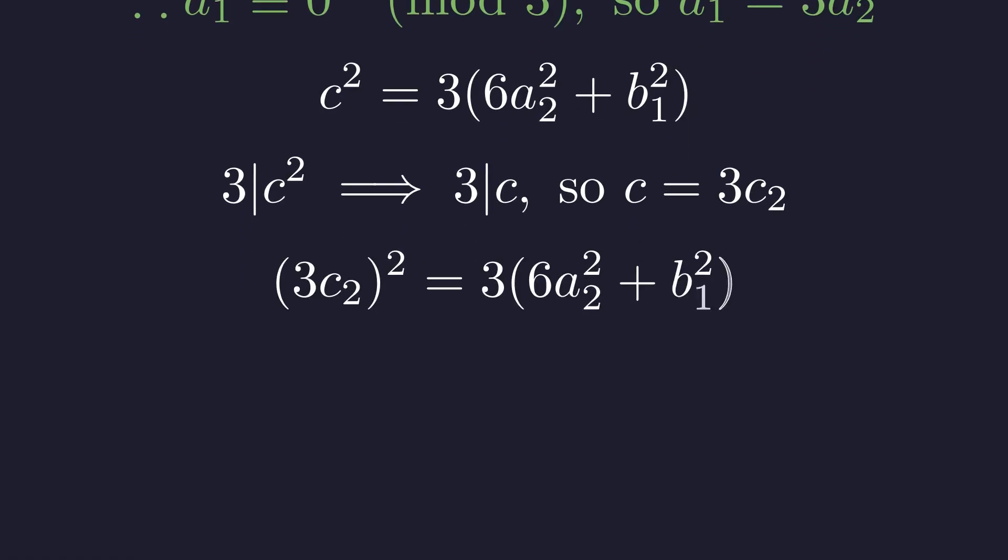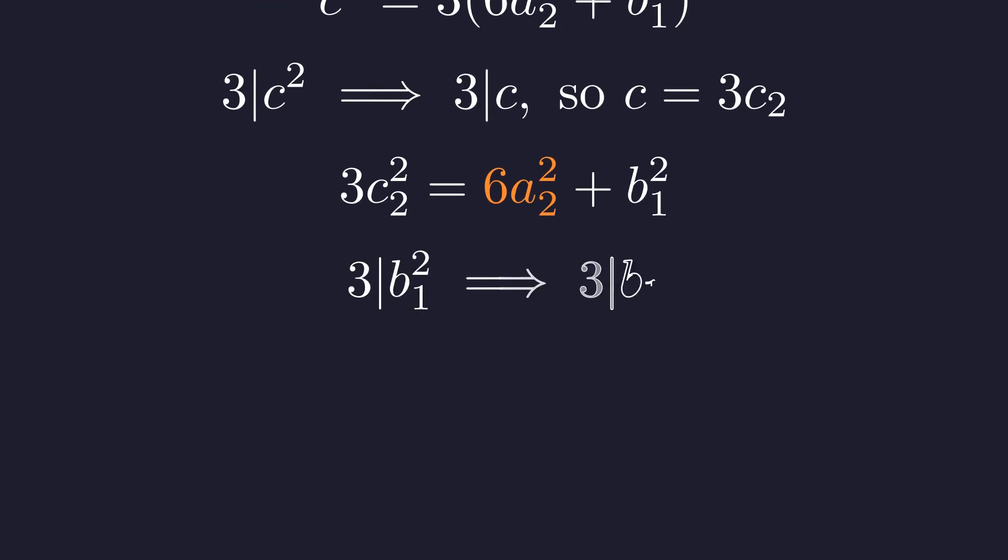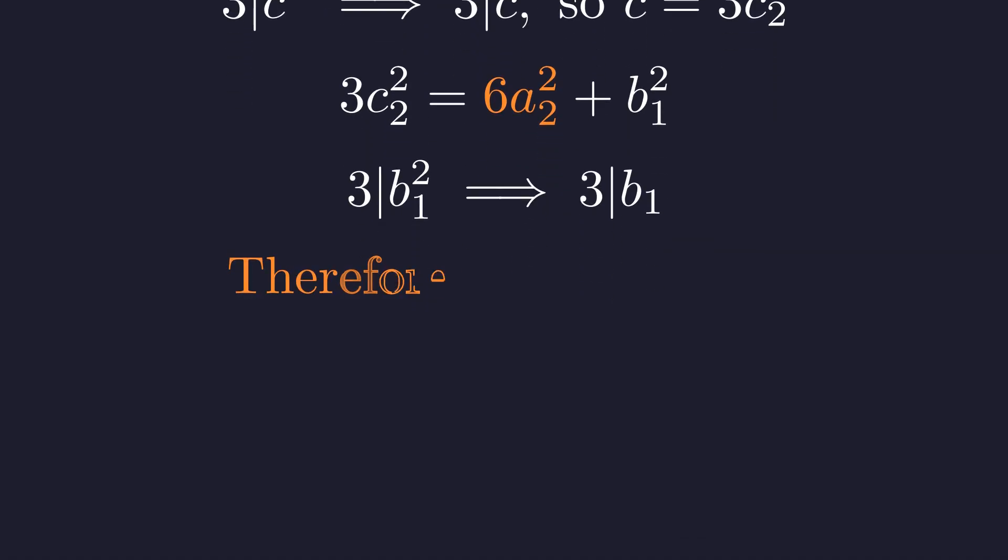If three divides c squared, then three divides c. So let c equal three times c₂. Now let's substitute c equals three times c₂ into our equation. Three times c₂ quantity squared is nine times c₂ squared. Both sides are divisible by three. Let's divide through by three. Dividing by three gives us this equation. Notice that six times a₂ squared is divisible by three. This means b₁ squared must also be divisible by three. If three divides b₁ squared, then three must divide b₁ itself.